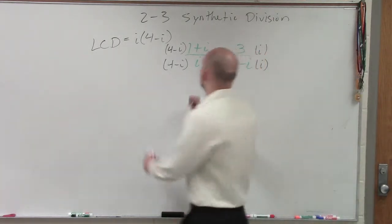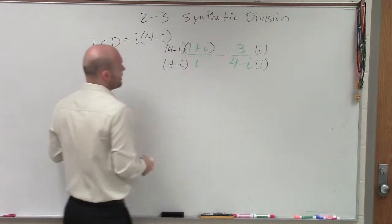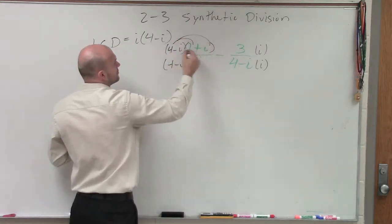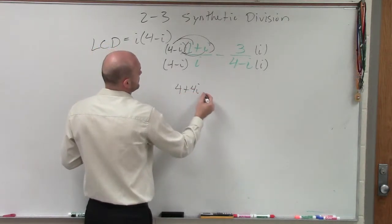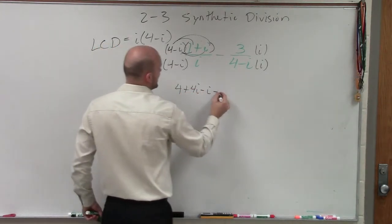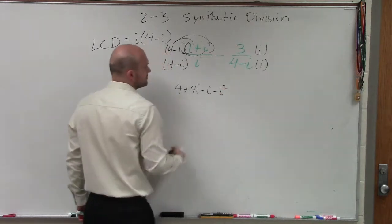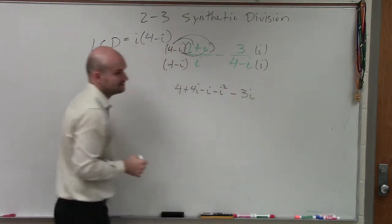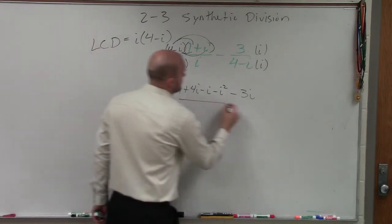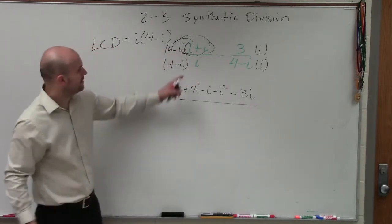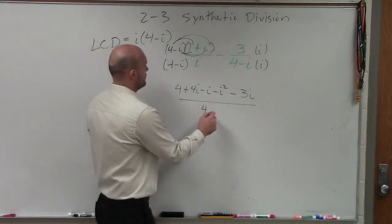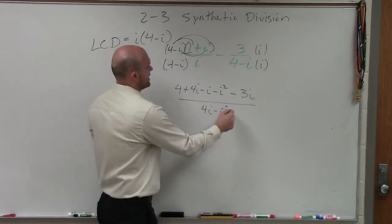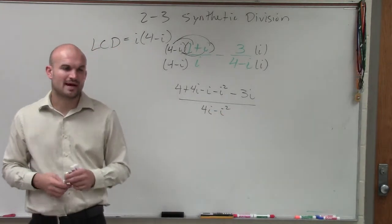So, on the left side, I have a nice FOIL problem. So, therefore, I have four plus four i minus i minus i squared minus three i. And then in my denominator, I have four minus i times i, which would be four i minus i squared. That's just multiplying out.